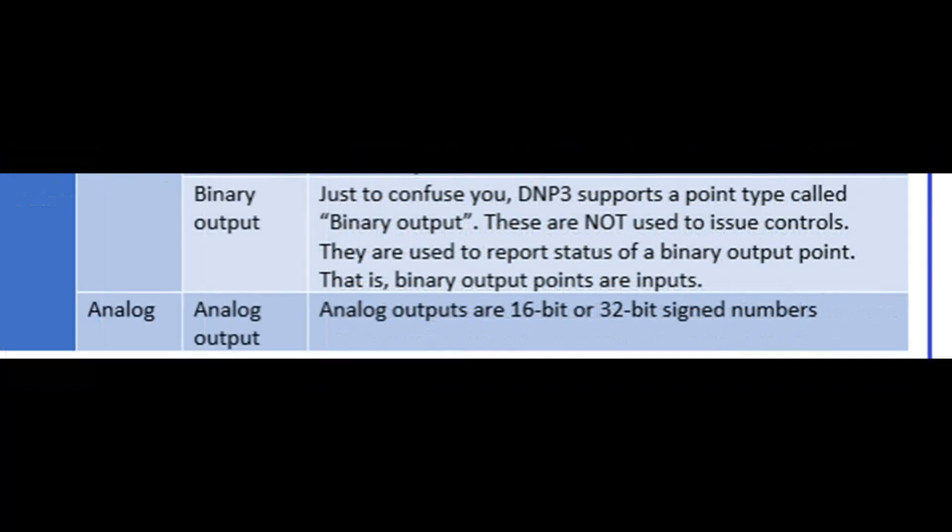DNP3 also supports a point type called binary output, but these are not used to issue controls — they are used to report the status of a binary output point. So a binary output point is actually an input. For analog output types, SCADA analog outputs are simply called analog outputs in DNP3 and are 16 or 32-bit signed numbers.